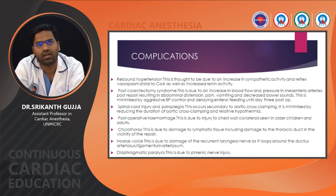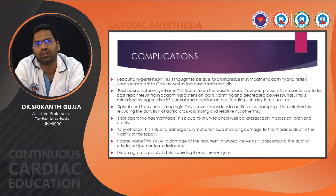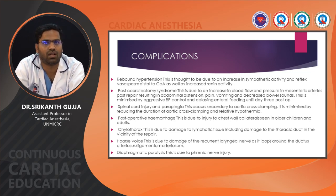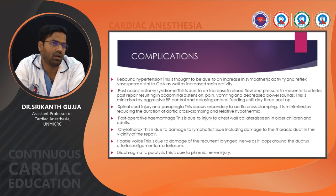Spinal cord injury and paraplegia occur secondary to aortic cross clamping and can be minimized by reducing the duration of cross clamping and using relative hypothermia. Postoperative hemorrhage is due to injury to chest wall collaterals seen in older children and adults. Chylothorax is due to thoracic duct injury. Hoarseness of voice is due to recurrent laryngeal nerve injury, which loops around the ductus arteriosus and ligamentum arteriosum. Diaphragmatic paralysis is due to phrenic nerve injury.